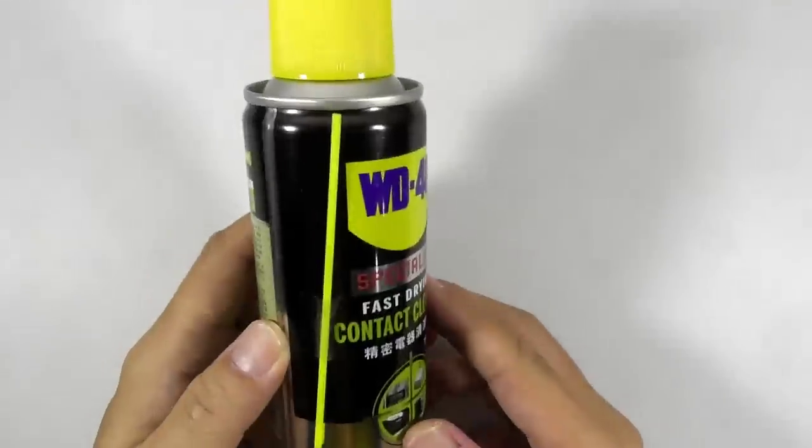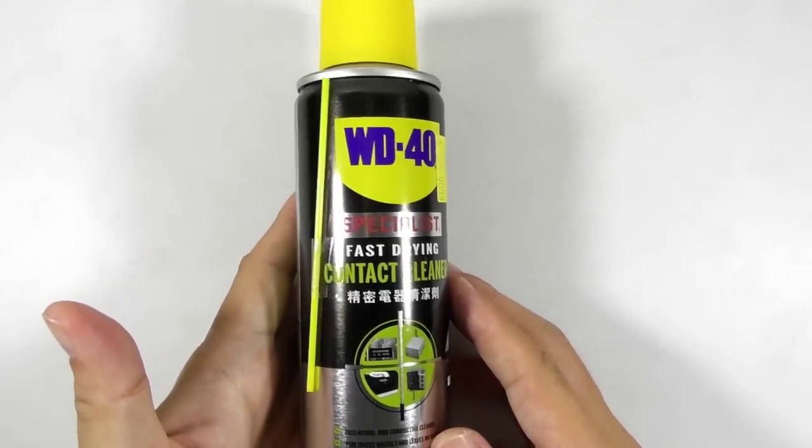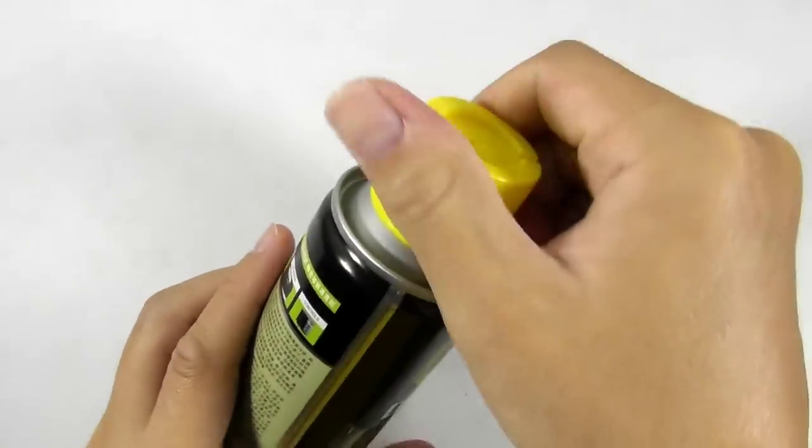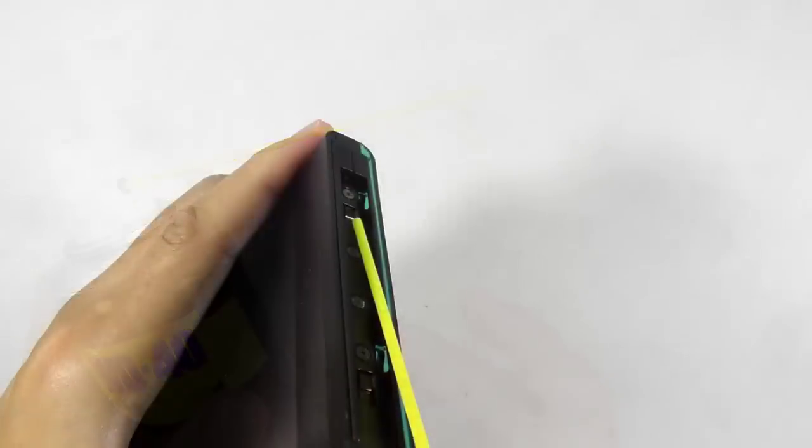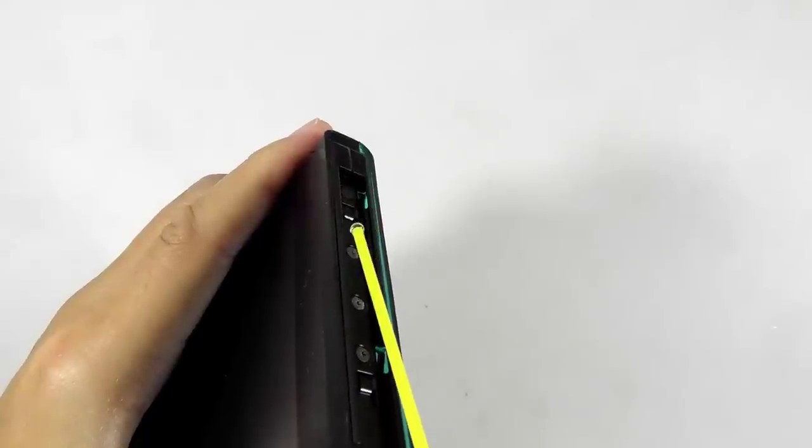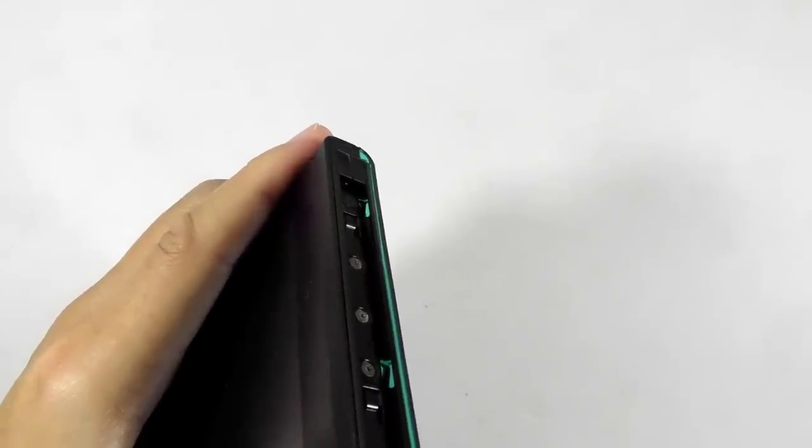Let's try spraying the pin connector with an electronic contact cleaner like the WD-40. It is cheap, easy to do, and we got nothing to lose. Make sure you have turned off the console and spray WD-40 directly into the problematic area. Then let it dry for a while.